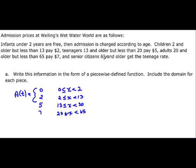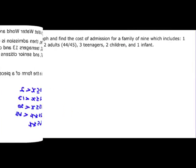And then senior citizens 65 and older get the teenage rate which the teenage rate over here was $5. So we go back to five here for including 65 and greater. We've now written this and we've gotten all the domains for each piece.